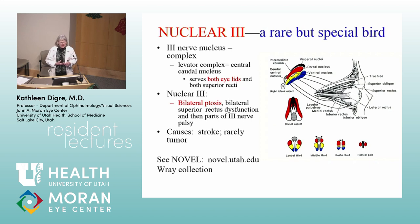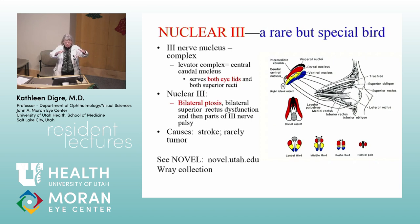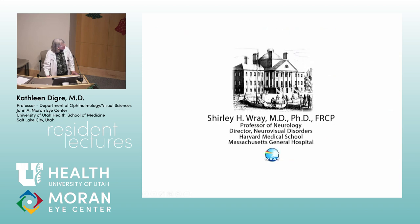I'm going to start with nuclear third nerve palsies. This is a very rare condition — I've probably seen two nuclear thirds in my whole career and they're never completely complete. But you need to know about it because nuclear thirds take out the levator complex, which is the central caudal nucleus. That means both eyelids are down and so are both superior recti. You may get a partial third on one side, but you see bilateral ptosis and bilateral superior rectus involvement, at least partially. Stroke is the usual cause, although you can also see it with tumors.